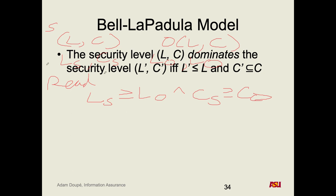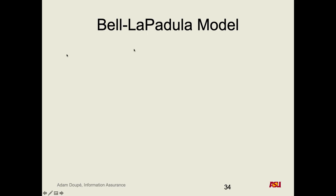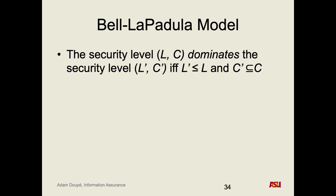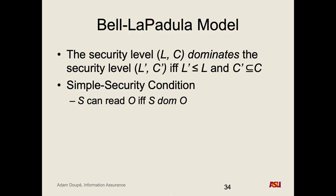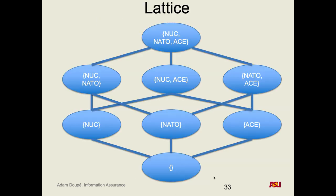We can call this 'dominates.' We define this relation — a security level dominates another if and only if L is greater than or equal, using L and L-prime. A subject can read an object if and only if S in terms of levels and categories dominates O. The star property is the reverse for writing, guaranteeing write-up also with categories. We get a nice lattice here of different categories — this lattice could be very big but you can always do the subset operation.